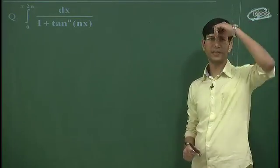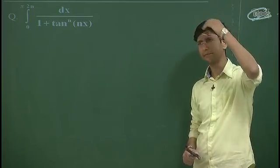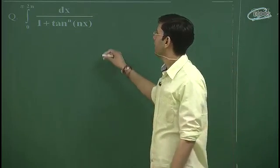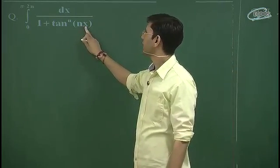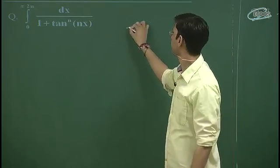tan x, tan of nx to the power n. Now applying substitution. So, what to substitute for x? For x substitute π/(2n) - x. Let's see what this becomes.